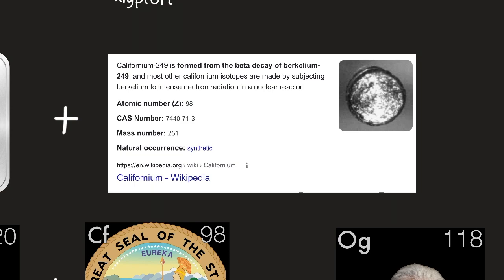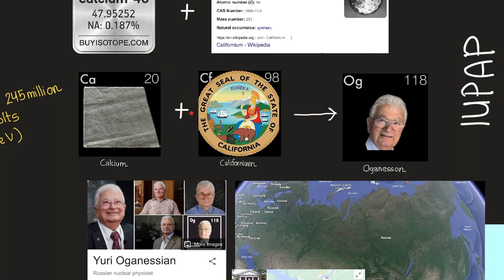Californium-249 is formed from the beta decay of berkelium, and most other californium isotopes are made by subjecting berkelium to intense neutron radiation in a nuclear reactor. Here we have calcium-48 being bombarded with californium-249 to produce Oganesson, with three neutrons emitted and one atom of Oganesson as a reaction product.